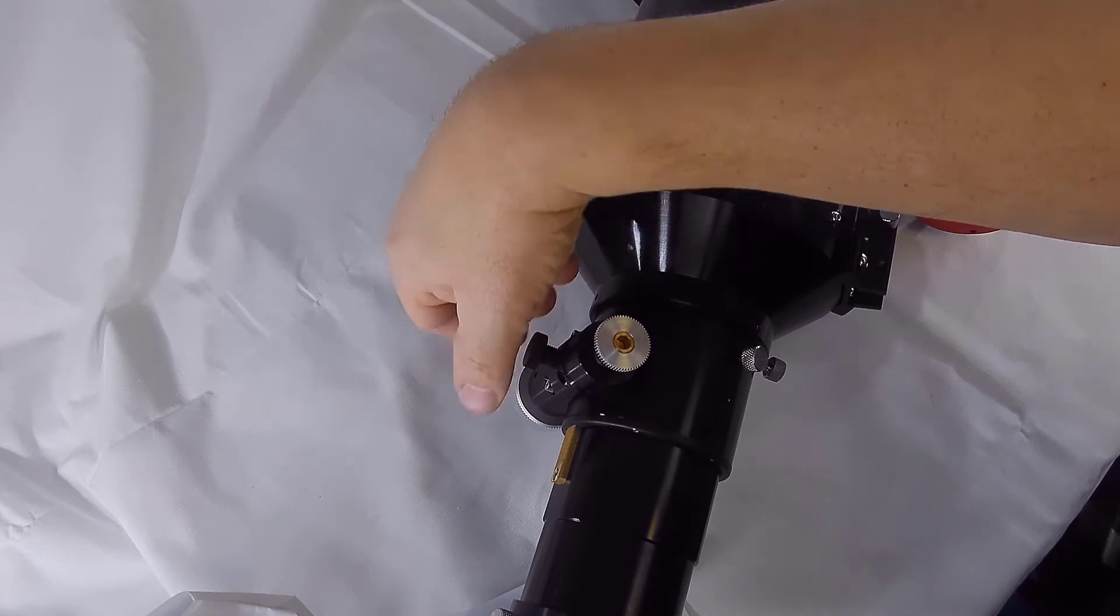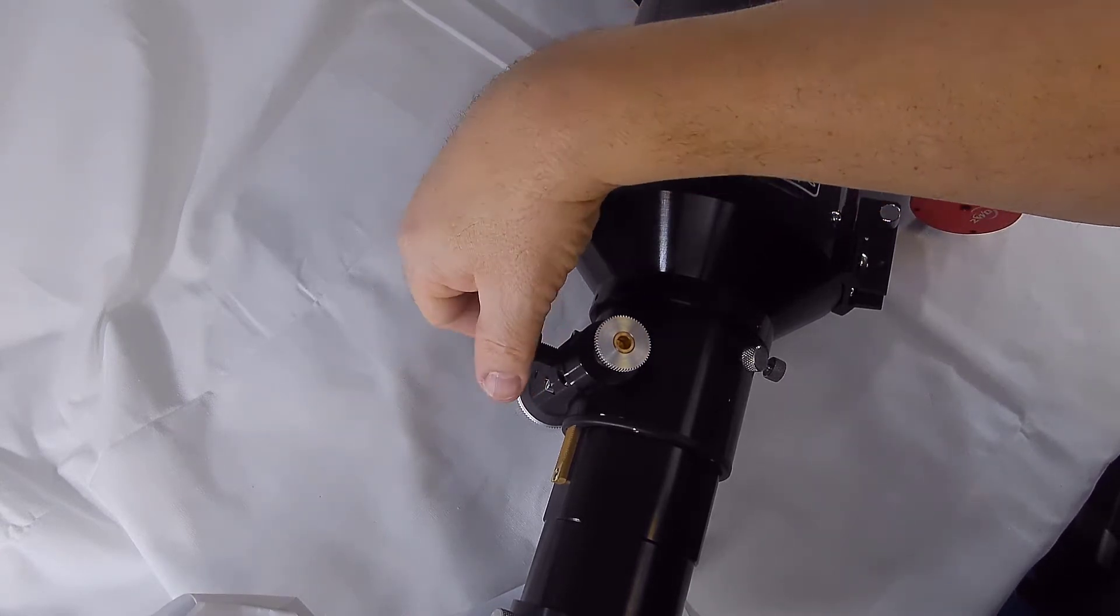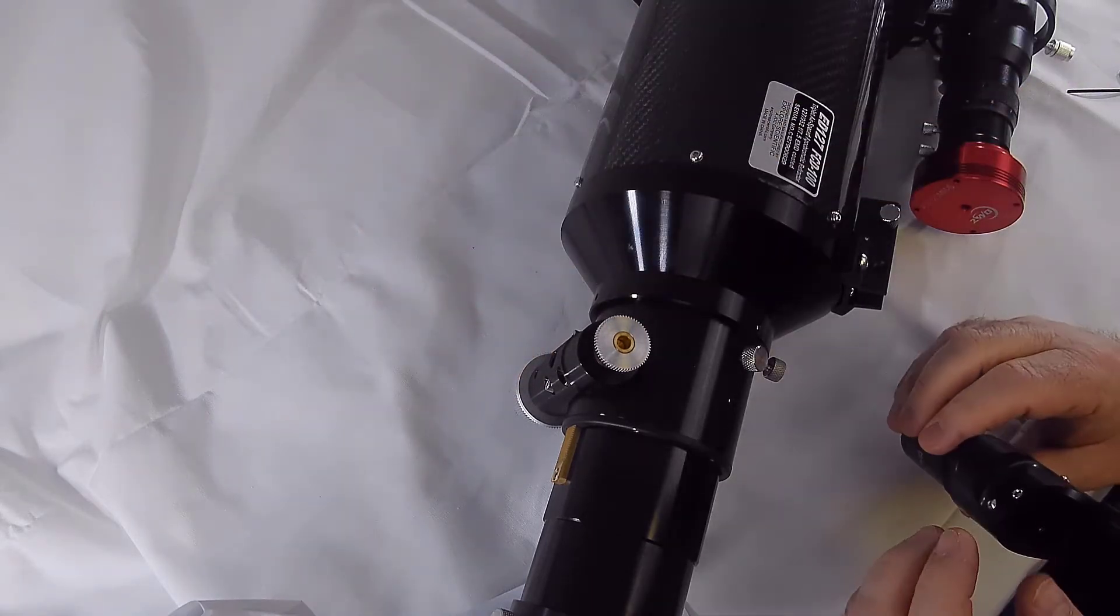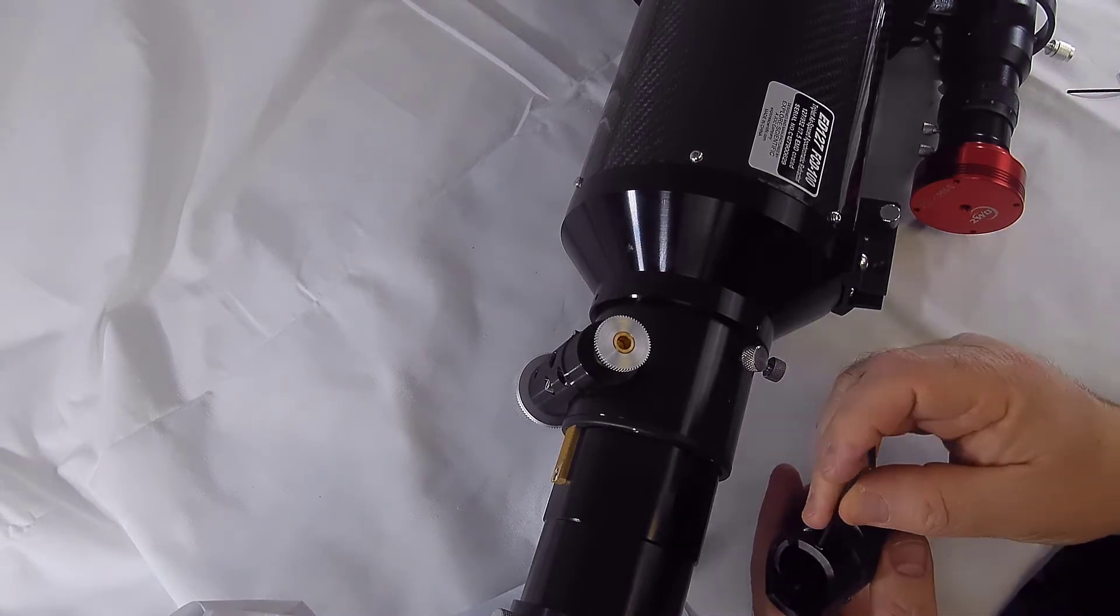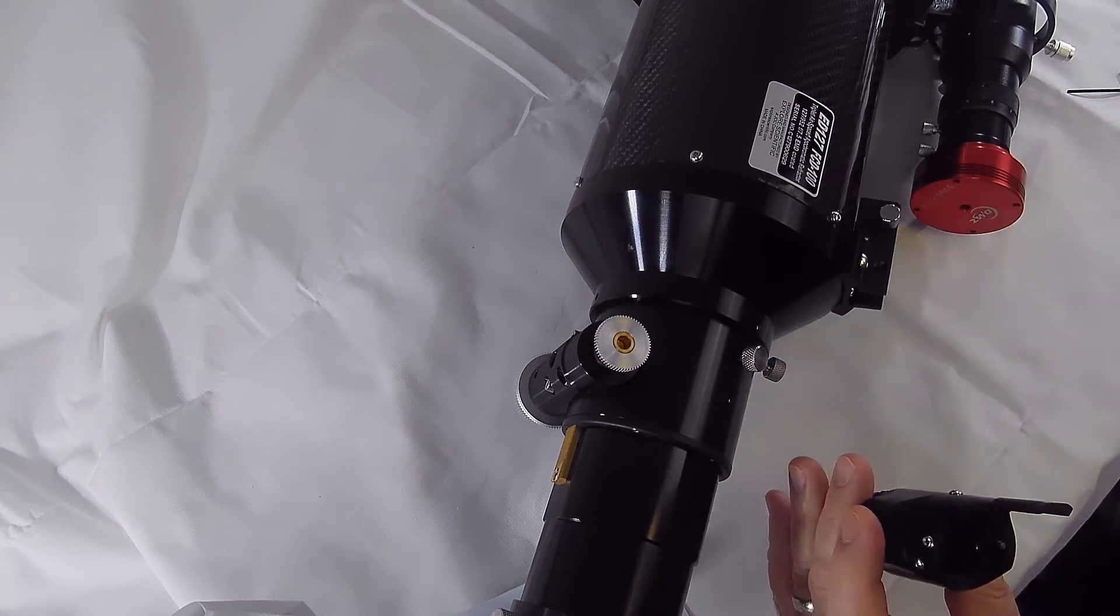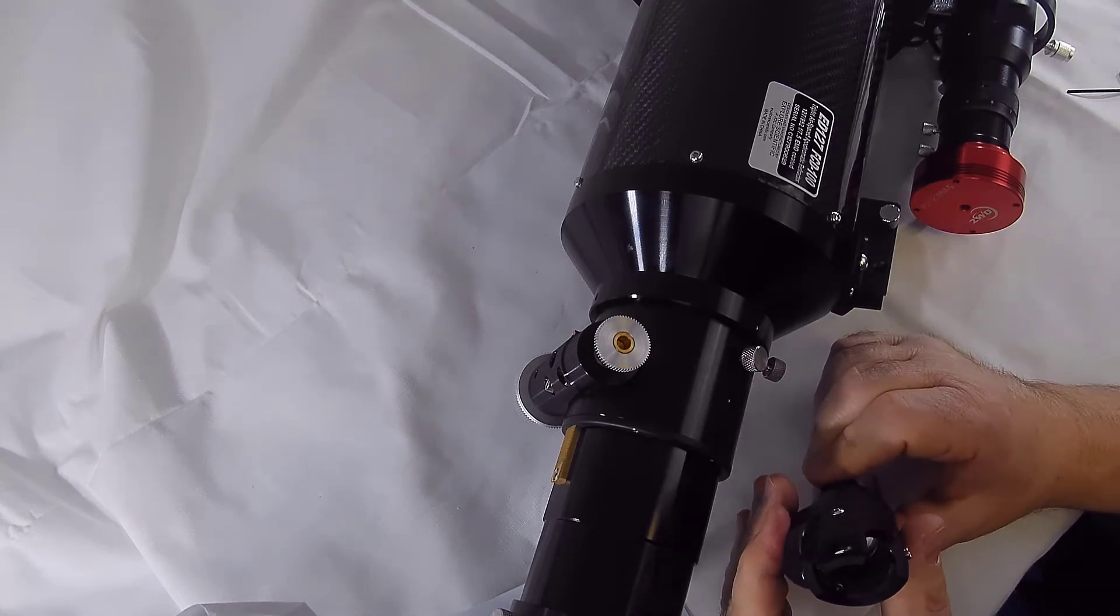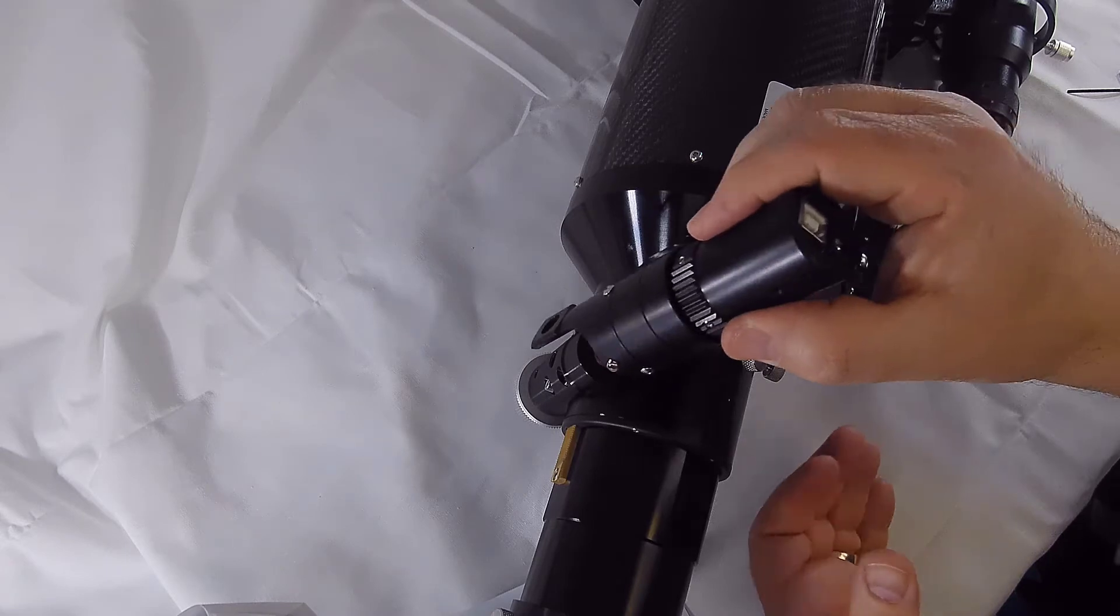The next thing is to take the tensioner knob off of the focuser that comes with the telescope and focuser. Next I'm going to loosen the set screws just to make sure that they're not sticking out inside the housing of the focus motor.